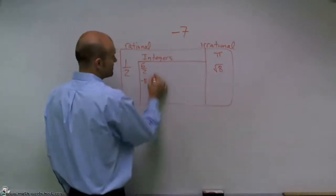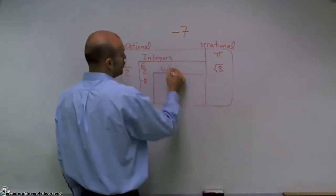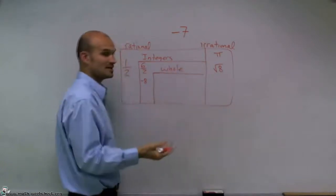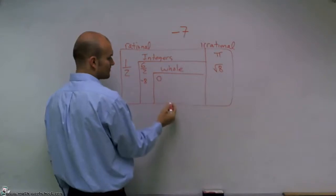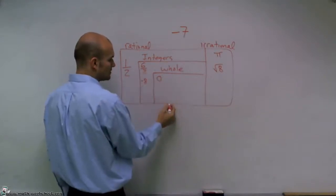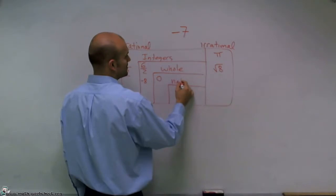Because our next set of numbers are whole numbers, which are just like the other ones, but they include the point 0, as integers would as well. But then we have natural numbers.